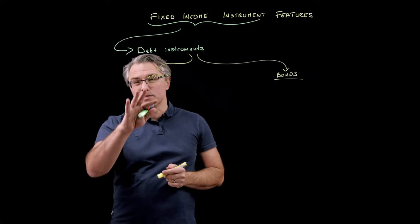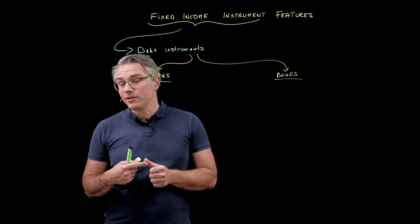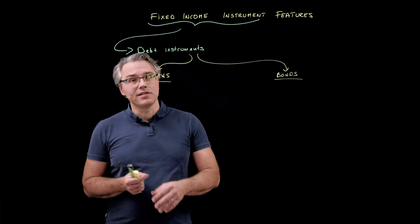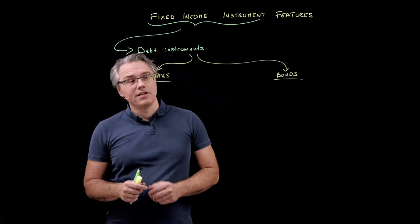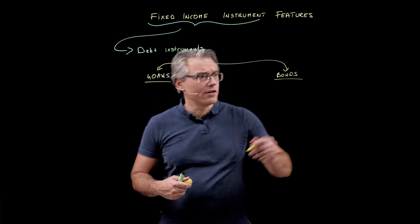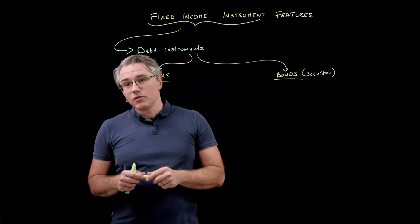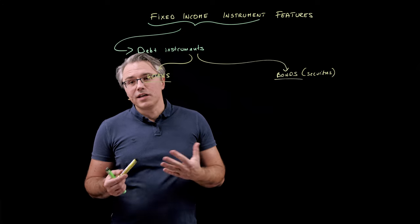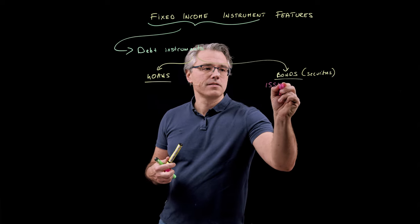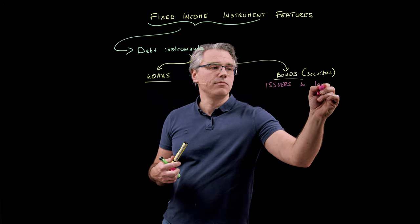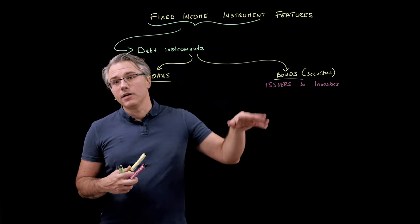Loans are obviously private agreements between a borrower and a lender. A borrower could be an individual person or a company of various size. A lender is very often a bank. We're not really going to talk about loans in these videos — we'll focus more on bonds, which are securities, meaning financial instruments which are tradable. Bond securities are based on a contractual relationship between the bond issuer, who is effectively the borrower of money, and investors or bondholders.